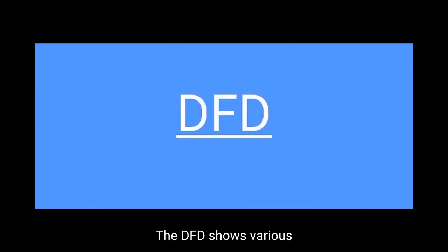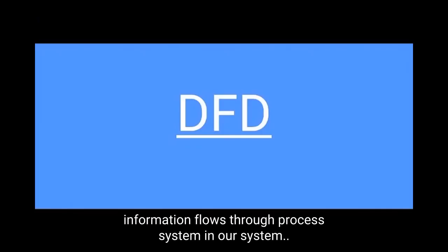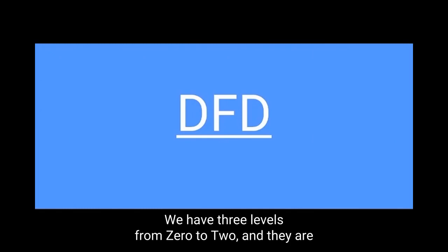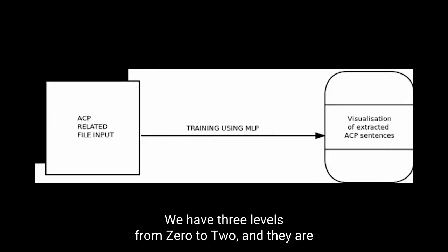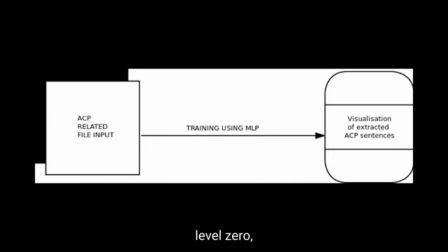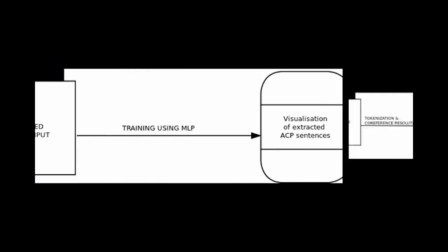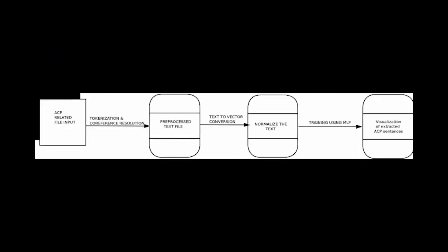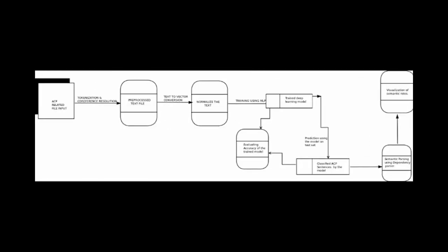A dataflow diagram shows the way information flows through a process or system. In our system, we have three levels from 0 to 2: level 0, level 1, and level 2.